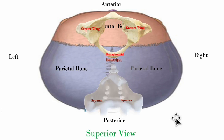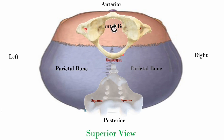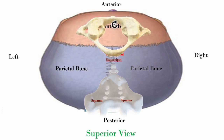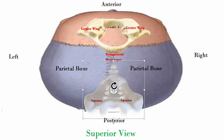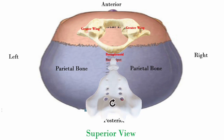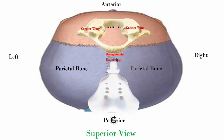Let's see how our sphenoid and occiput move in flexion and extension. Here's our greater wings — you can see those greater wings are going to move inferiorly and laterally. Meanwhile, the basi sphenoid is going to move right towards your face, towards you as you're sitting at the head of the patient. Now the occiput — the basi occiput is going to move towards you, and the occipital squama are going to move inferiorly towards the feet.